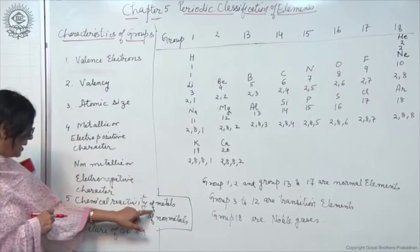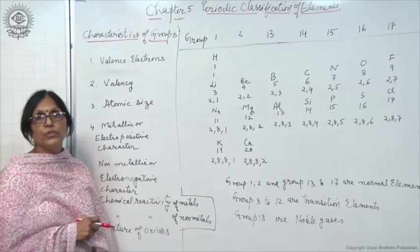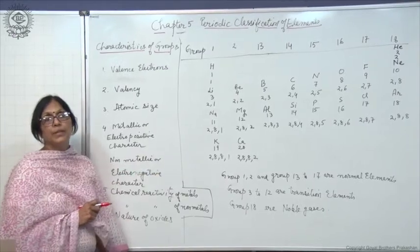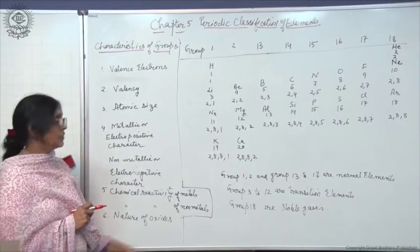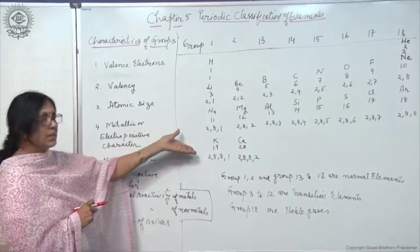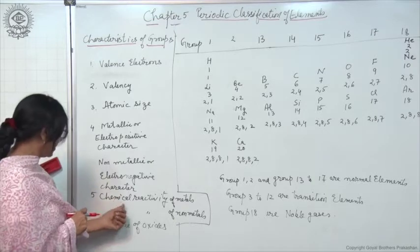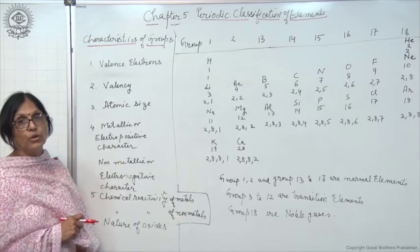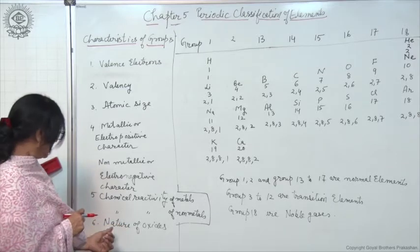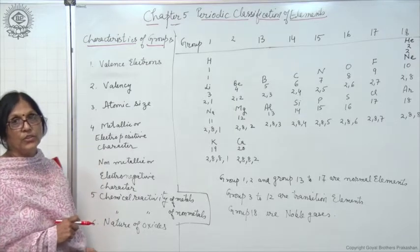Similarly, chemical reactivity of metals increases on moving down a group, because metallic character is increasing, so chemical reactivity also increases. Chemical reactivity of non-metals decreases on moving down a group for the same reason. On moving down a group, there is no change in the nature of oxides.